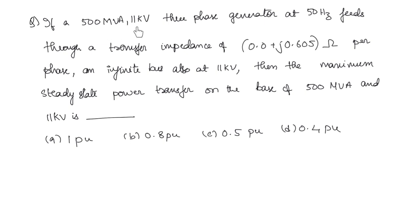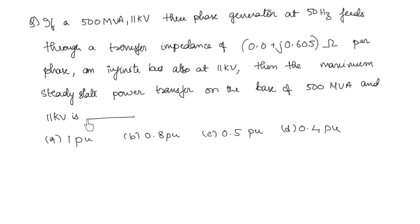A 500 MVA, 11 kV, 3-phase generator at 50 Hz feeds through a transfer impedance of 0.0 + j0.605 ohms per phase to an infinite bus also at 11 kV. The maximum steady-state power transfer on the base of 500 MVA and 11 kV is? The options are given in per unit, so we will solve accordingly.